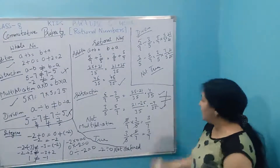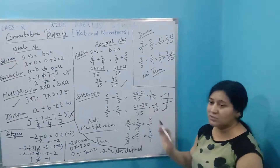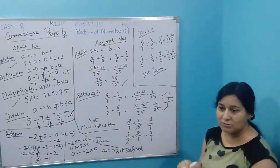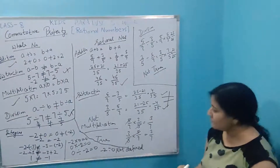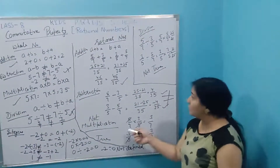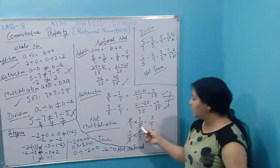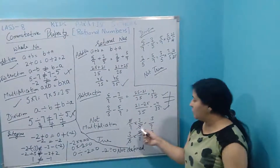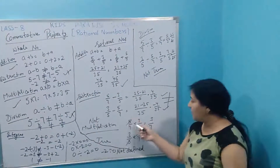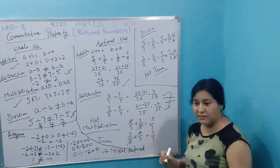It means in the case of subtraction, commutative property is not true for rational numbers. The multiplication case is true.